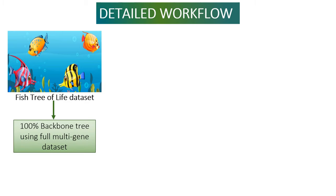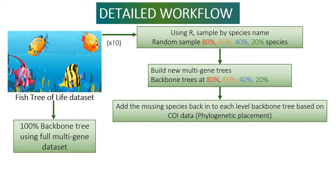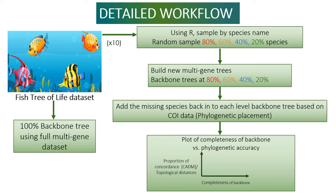First, I generated a 100% complete backbone tree using the full multigene Fish Tree of Life dataset and kept this tree aside for downstream analysis. Then I built different-level backbone trees with random samples at 80%, 60%, 40%, and 20%. As the next step, I added the missing species back into each level backbone tree based on COI barcode data. Finally, I plotted the completeness of the backbone tree against several metrics of phylogenetic concordance and topological distance.